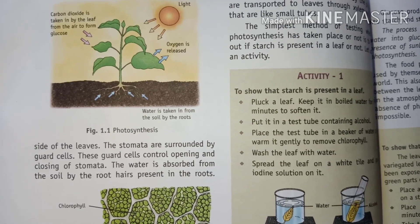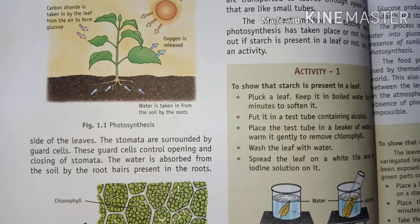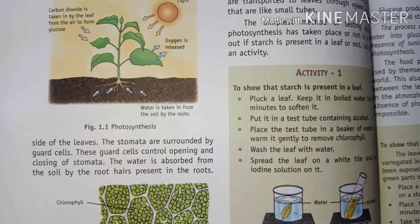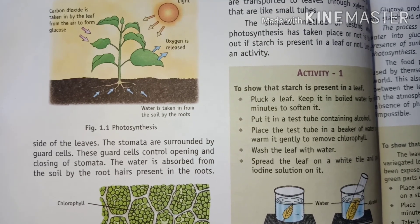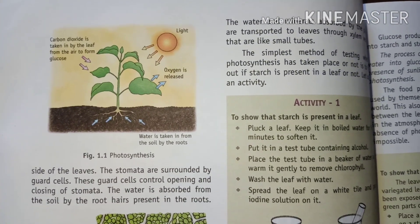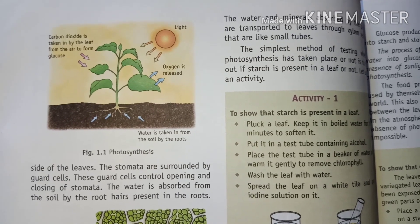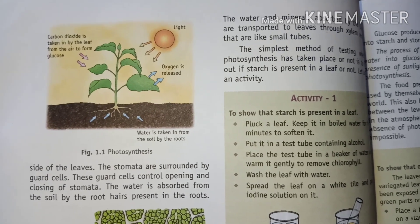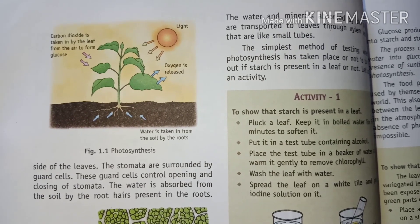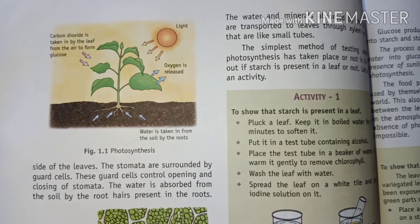Water is absorbed from the soil by the roots of the plant. The water is taken up from the roots. Oxygen is released, and light comes from the sun. Carbon dioxide is taken in by the leaf from the air to make glucose.